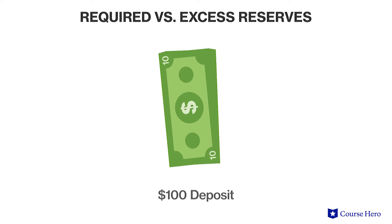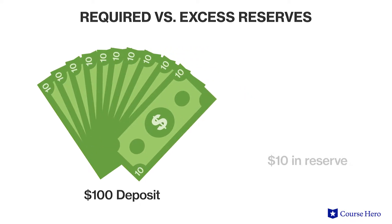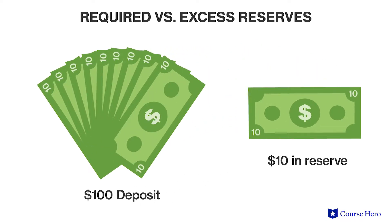Assume the Federal Reserve requires a bank to keep 10% of its deposits as reserves. If a customer deposits $100 into their bank account, the bank must hold at least $10 in reserve. The bank can use the remaining $90 in excess reserves to invest, loan to individuals, and engage in other profit-making measures.